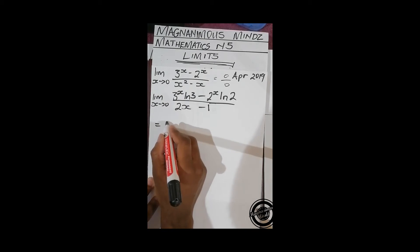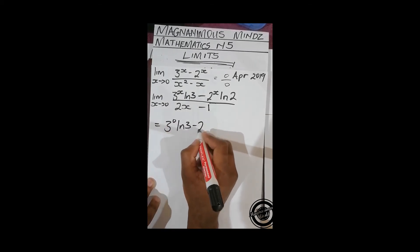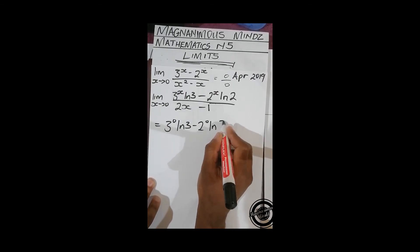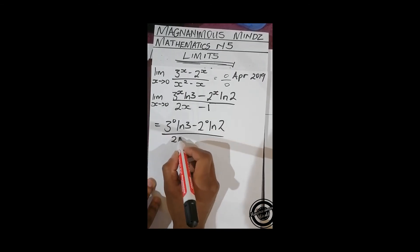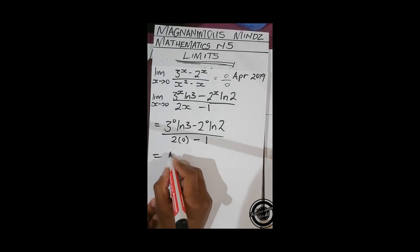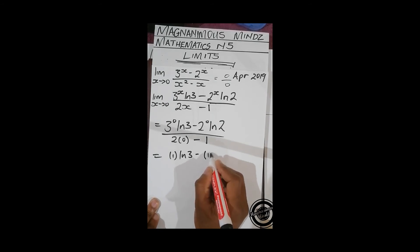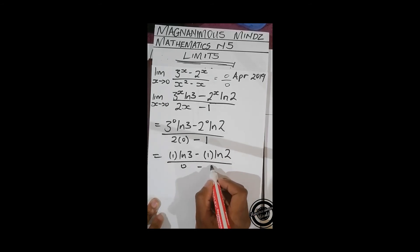If we do that, it's going to be 3^0 ln(3) minus 2^0 ln(2) over 2(0) minus 1. This gives us 1·ln(3) minus 1·ln(2) over 0 minus 1.